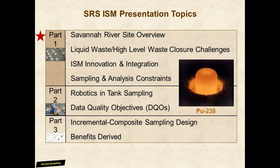Let's take a look at the topics to be covered in part one. Part one discusses four main topics. First is an SRS overview — where it's located, the types of operations involved, and the specifics on why ISM contributes to assessing and sequestering the nuclear waste. Next is liquid waste, also known as high-level waste, and the closure challenges associated with it. Nuclear waste is beyond ordinary waste and requires advanced procedures and technologies.